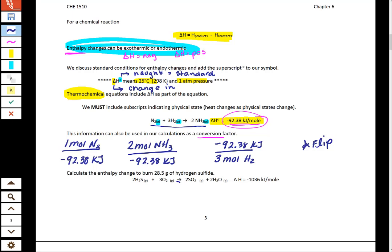Let's see how we can take these conversion factors and use them with a typical stoichiometry problem. This one says calculate the enthalpy change to burn 28.5 grams of hydrogen sulfide.